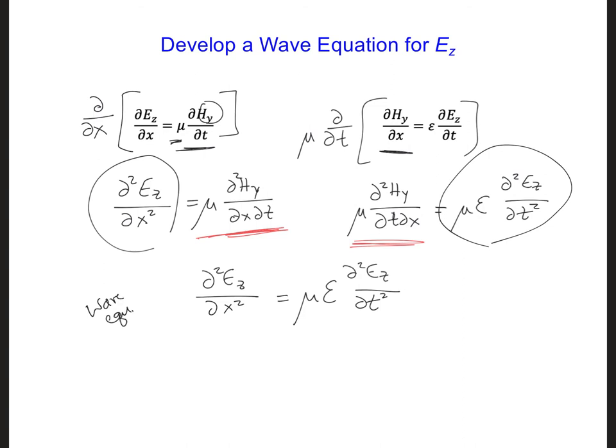The only thing that is left is that now we need to convert this equation to the frequency domain, which we can do by changing this partial time derivative into a multiplication by j omega. So this will be taking the Fourier transform. The left side stays the same, because that's just with regards to space, not time.